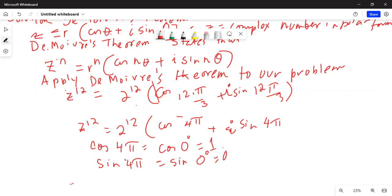Hence, z to the power of 12 is 2 to the power of 12 multiplied by 1 plus i times 0, which equals 2 to the power of 12. That's your final answer.